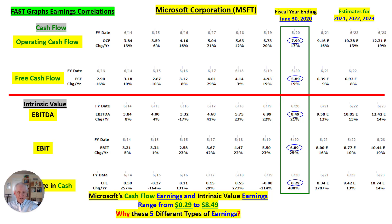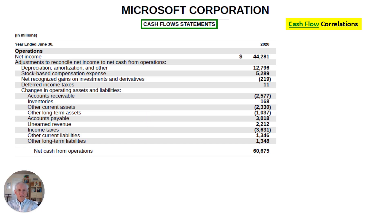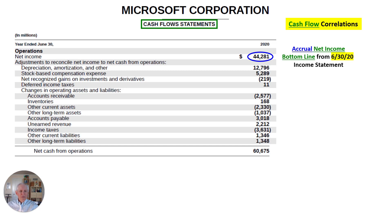Why these five different types of earnings? That's the question. We're going to go into the cash flow statement. To me, this is a very important statement. This takes accrual back to real cash flow. We talked before that the bottom line in accrual — net income after all costs and expenses — was $44,281,000,000 for Microsoft. But that's only an accounting number. When we do these adjustments, we'll come up with net cash from operations of $60,675,000,000. This is what I really like to see in a great company — they can turn that accrual profit into more cash flow.